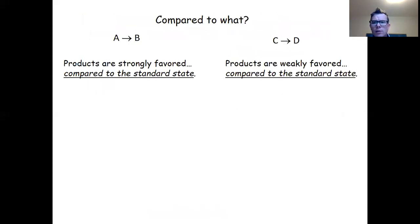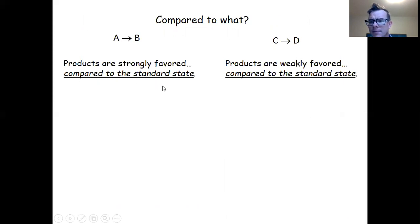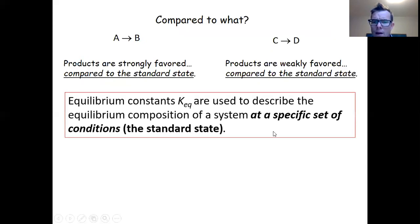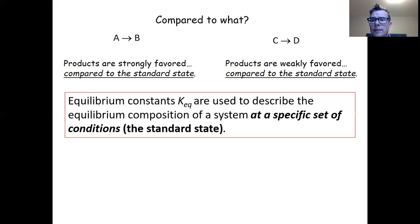When we talk about equilibrium, what we're comparing to is implied. What we really mean is that the products are strongly favored — or weakly favored — compared to the standard state. Equilibrium constants describe the equilibrium composition of the system at a specific set of conditions, which we refer to as the standard state. Once you understand that and start to grasp its implications, it becomes a very powerful idea.